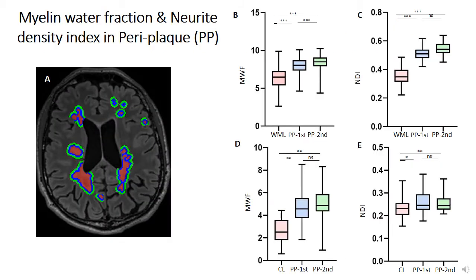Then, we decided to step outside the lesion to investigate the perilesional tissue — the first and second two-voxel-sized perilesional tissue around the white matter lesion and cortical lesion. Our results showed that in both white matter and cortical lesions, myelin water fraction and NDI are higher in perilesional tissue compared to within the lesion, and the pathology centrifugally decreases with distance from the lesion core.